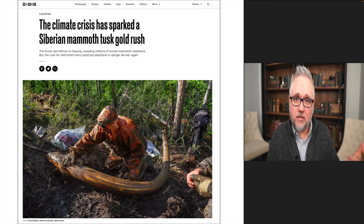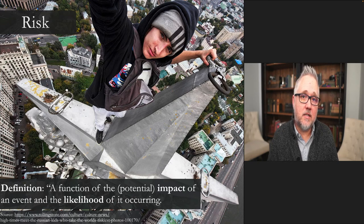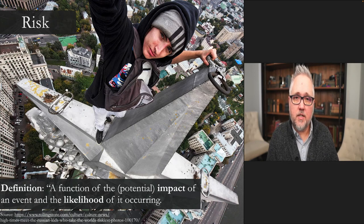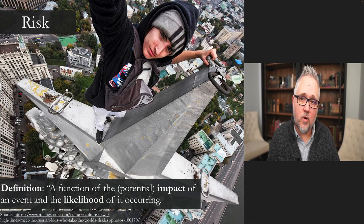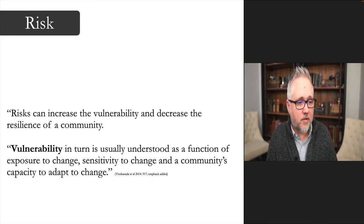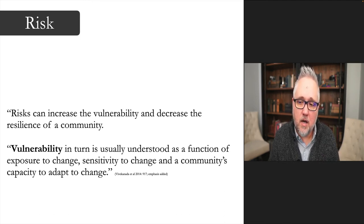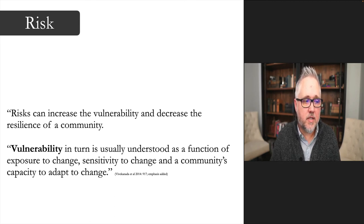So mitigation and adaptation — the third part of the stool is understanding what risk is: a function of the potential impact of an event and the likelihood of it occurring. This connects to the Collier and Hoffler cost-benefit calculation, where the costs and benefits depend on the risk of that outcome actually occurring — in their case, winning the war. Risk can increase the vulnerability and decrease the resilience of a community. Vulnerability is in turn usually understood as a function of exposure to change, sensitivity to change, and a community's capacity to adapt and respond.